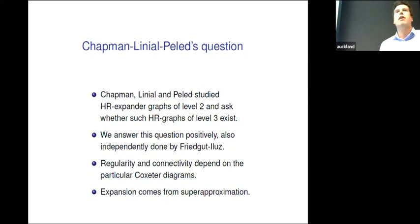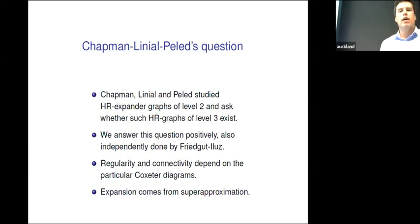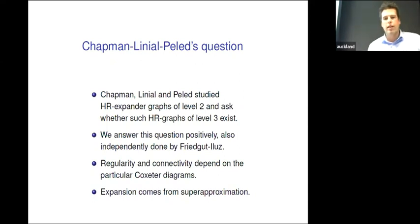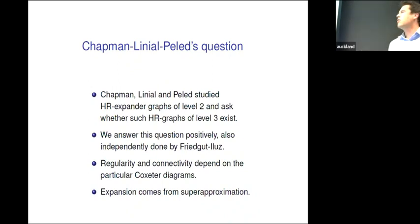They studied highly regular expander graphs of level two. Level two means it's regular and also the number of triangles on every edge is a constant. They asked: can you construct HR graphs of level three or higher? Three is of course the first open one after two. We can answer this question positively. As often happens, this question is in the public domain, so other people also solved this question. I will briefly mention how they solved it by completely different methods.